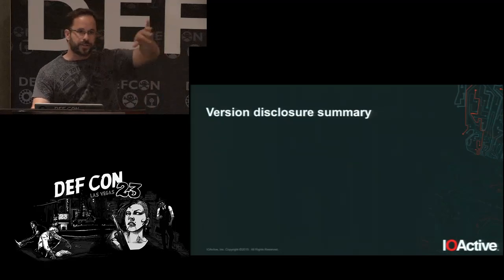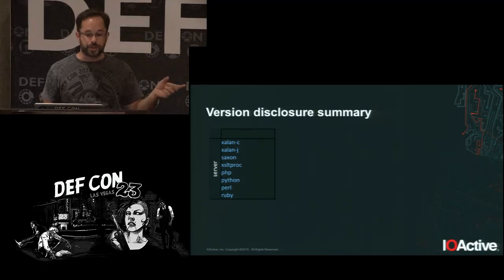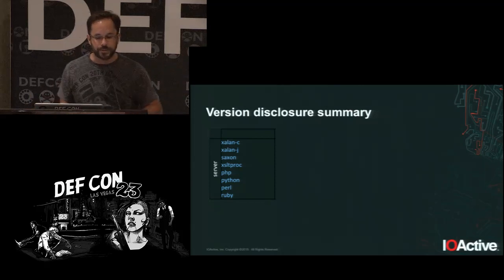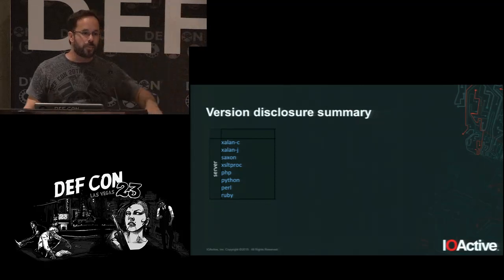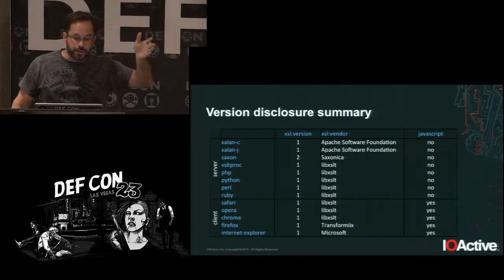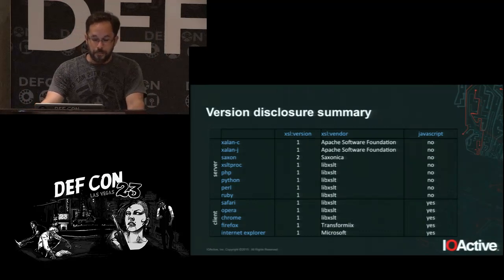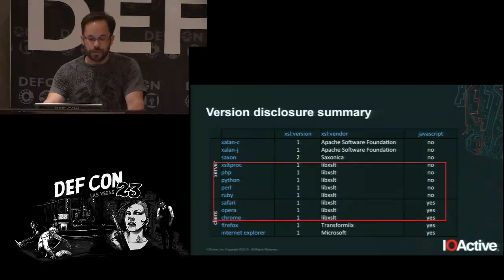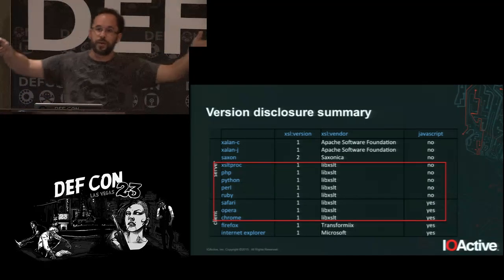At the end of each section I will show a brief summary for the server side. We have XSLT proc — the standalone version of libXSLT — and PHP, Python, Ruby all related to libXSLT. Then the client-side browsers. You'll see columns for version, vendor, and whether JavaScript is supported. LibXSLT is the most widely deployed, so when it affects server-side processes it may also affect client-side ones.